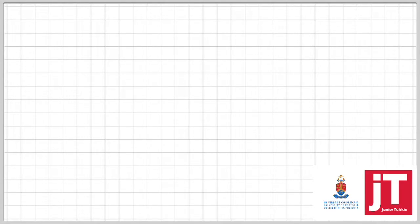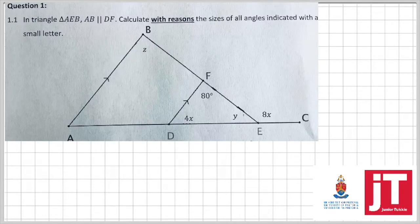Without any further ado, let's get straight into the first question. In our first question, we're told that in triangle AB, the side AB is parallel to DF. Calculate with reasons the sizes of all the angles indicated by small letters.